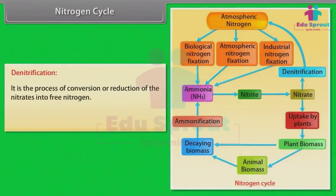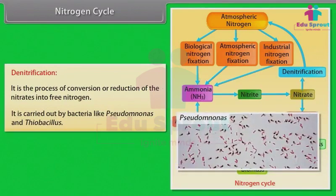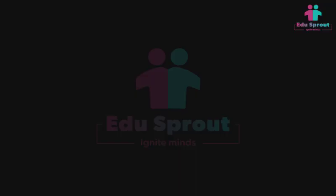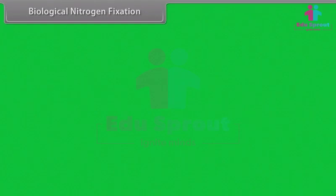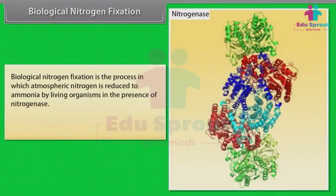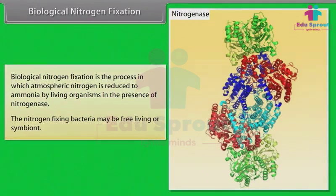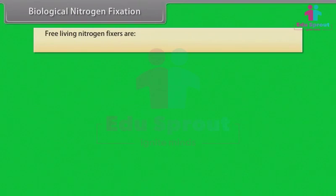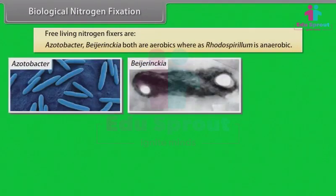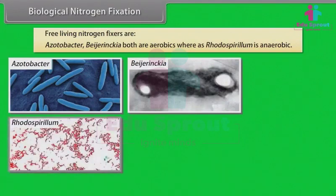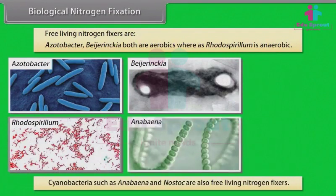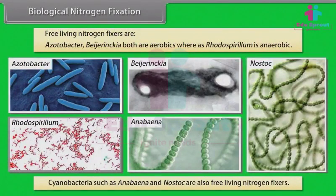Denitrification is the process of conversion or reduction of nitrates into free nitrogen; it is carried out by bacteria like Pseudomonas and Thiobacillus. Biological nitrogen fixation is the process in which atmospheric nitrogen is reduced to ammonia by living organisms in the presence of nitrogenase. Free-living nitrogen fixers include Azotobacter and Beijerinckia, both aerobic, whereas Rhodospirillum is anaerobic. Cyanobacteria such as Anabaena and Nostoc are also free-living nitrogen fixers.